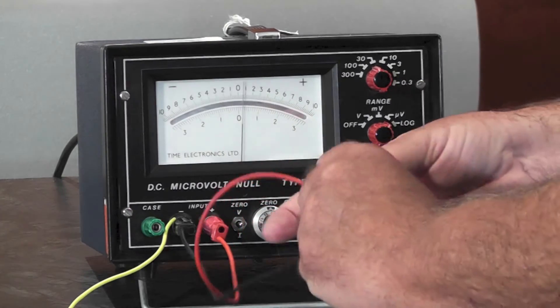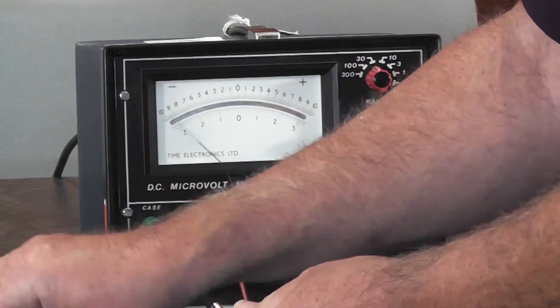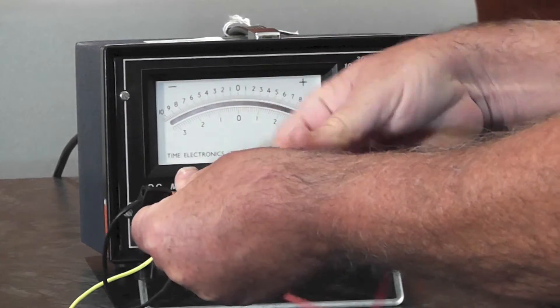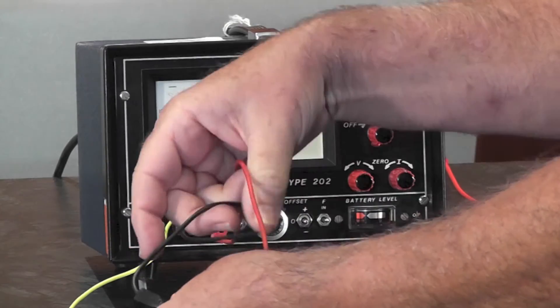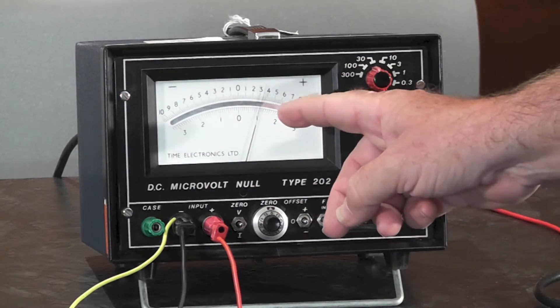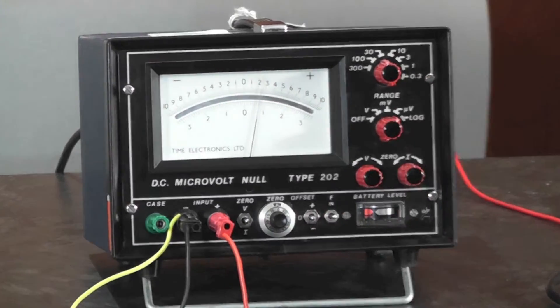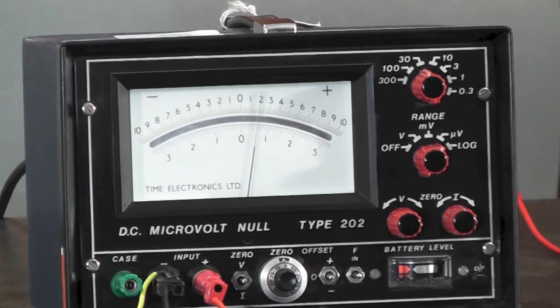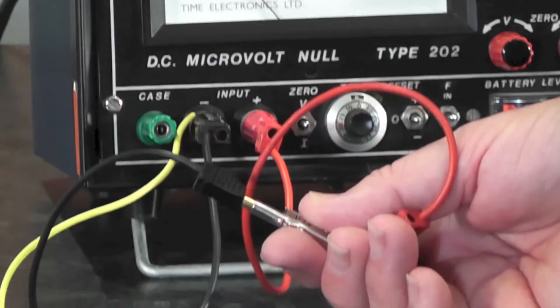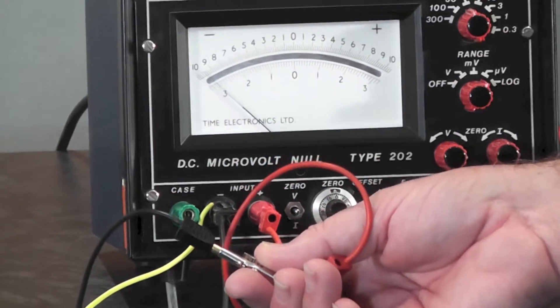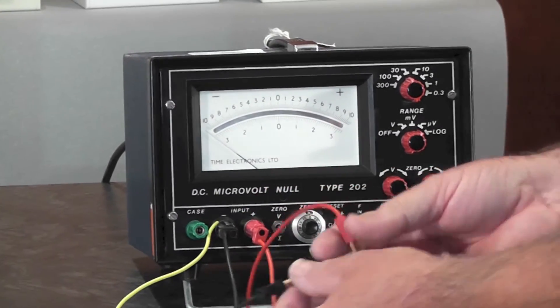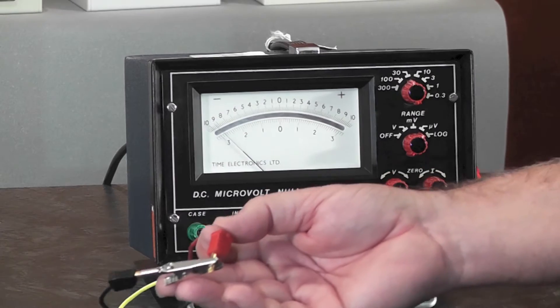But if I introduce a good old steel crocodile clip into the equation, just breaking the line for a minute and introducing a crop clip, here we are. We can see without even touching it we've got about 10 microvolts or so. And if I put my little hand on there it's going way off over 30 microvolts. So that's just a humble crop clip inserted in the line.